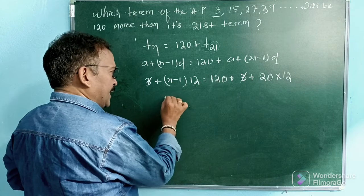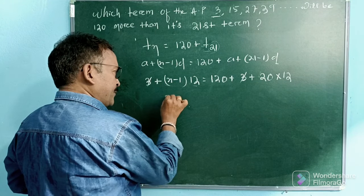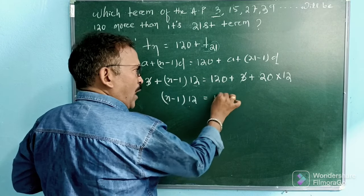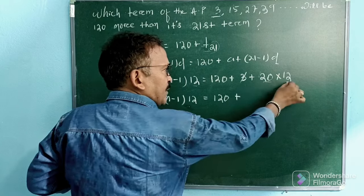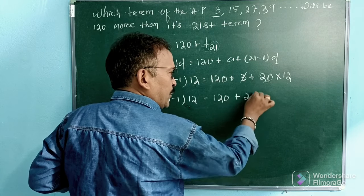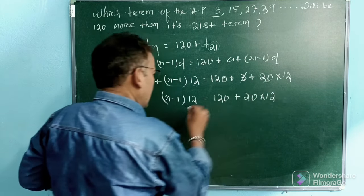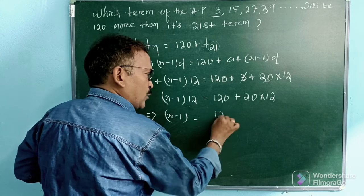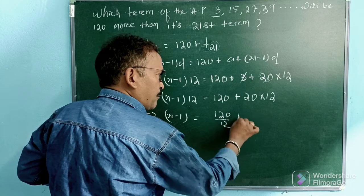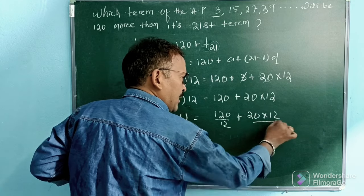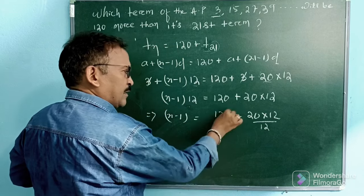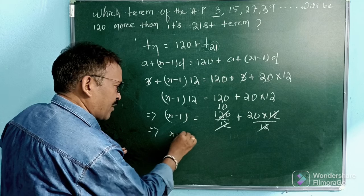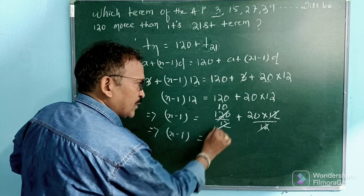So here 3 plus (n-1) times 12 is equal to 120 plus 3 plus 20 into 12. So here (n-1) times 12 is equal to 120 plus 240. So (n-1) times 12 is equal to 360.